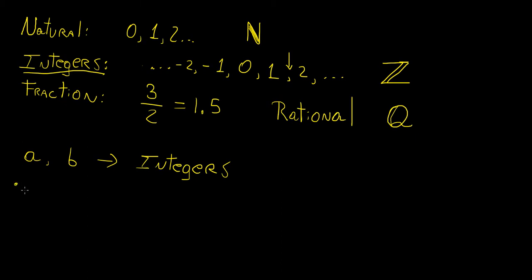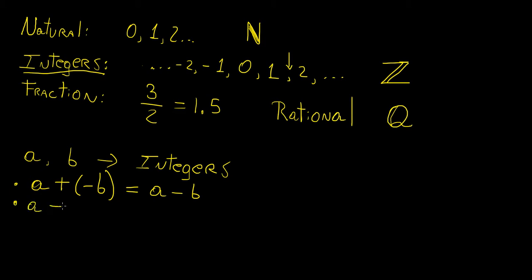The first rule is going to be addition of a positive integer plus a negative integer. This is the same as saying we're going to have a minus b. Here we have a positive sign multiplying a negative sign, and that's going to become a negative sign. The second rule is a minus minus b. If the signs are the same and they're multiplying each other, they're going to always be positive. So this is going to reduce to a plus b.